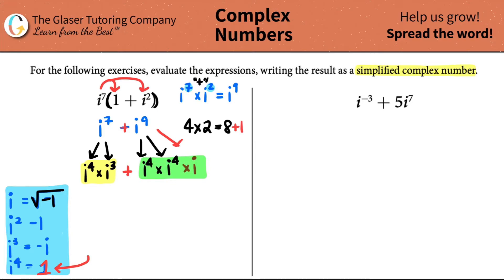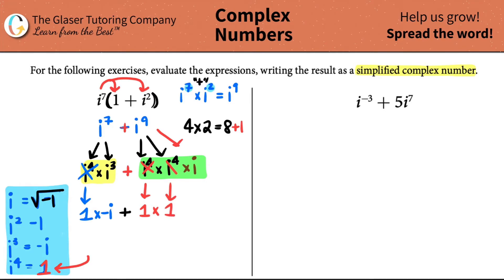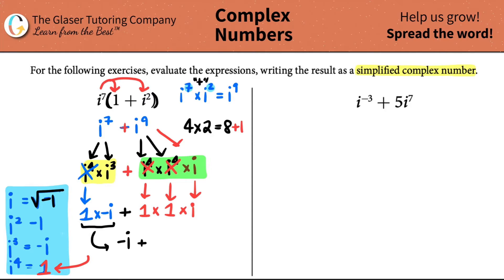Now let's simplify. i to the fourth equals one, so we can cancel it out. One times i to the third — and i to the third is negative i. Plus, for i to the ninth, I have two i to the fourths, both equal one, so they cancel. I'm just left with i. So I have one times negative i, which is negative i, plus one times one times i, which is just i.